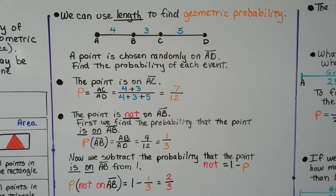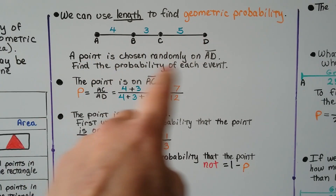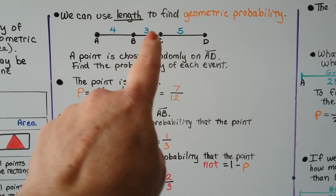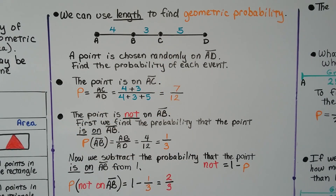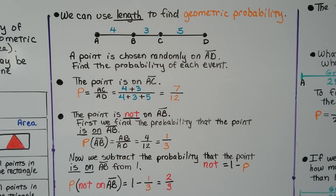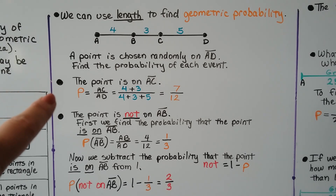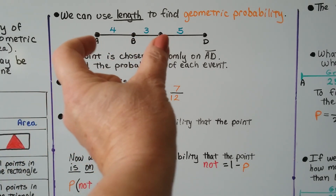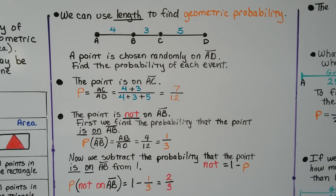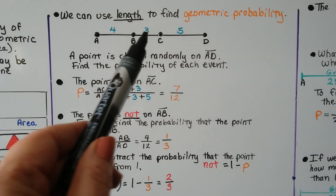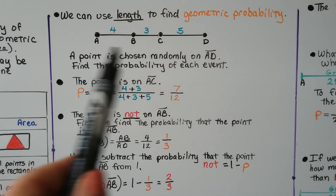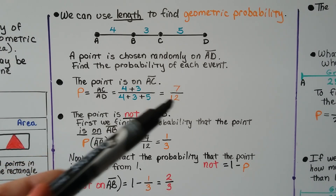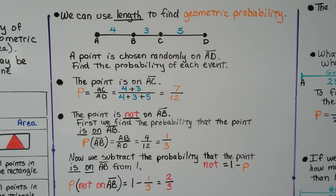We can use length to find geometric probability. Here we have segment ABCD going across, where AB = 4, BC = 3, and CD = 5. A point is chosen randomly somewhere on segment AD. Find the probability that the point is on AC: that would be AC over AD, which is 4 plus 3 over 4 plus 3 plus 5 — that's 7 over 12.